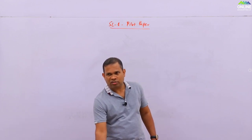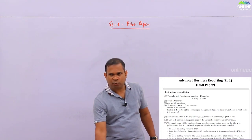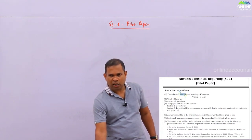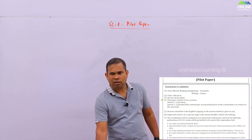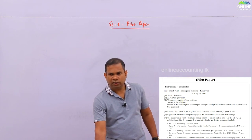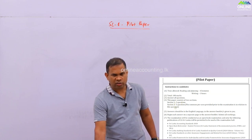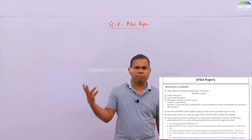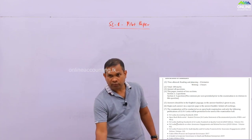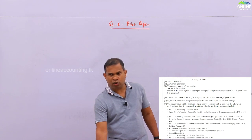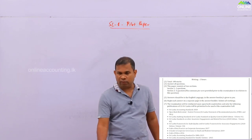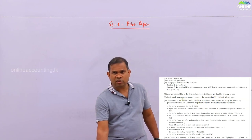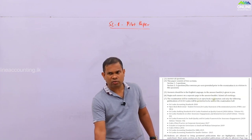Let's go to the instruction page. You can see Strategic Level 1 Advanced Business Reporting, SL1 pilot paper. Time allowed: 15 minutes reading and 3 hours writing. 100 marks, all questions compulsory. This paper consists of 2 sections: Section 1 has 2 questions, and Section 2 has 1 question based on the common pre-seen. Answers should be in the English language in the answer booklet given to you.